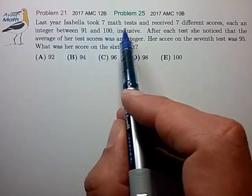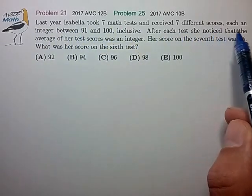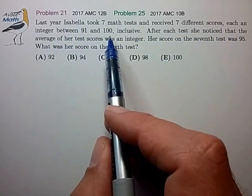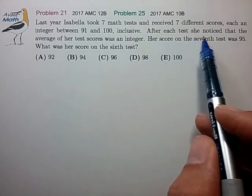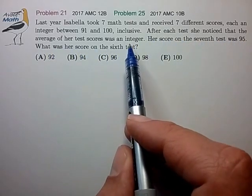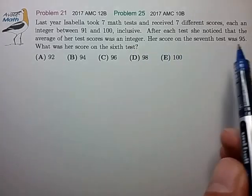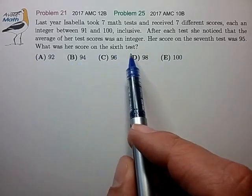Last year, Isabella took seven math tests and received seven different scores, each an integer from 91 to 100. After each test, she noticed that the average of her test scores was an integer. Her score in the seventh test was 95. What was her score in the sixth test?